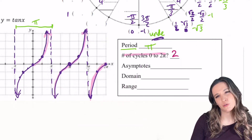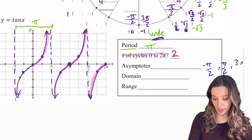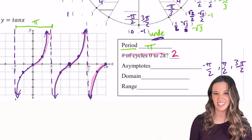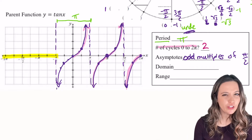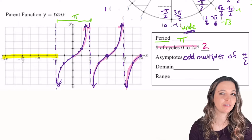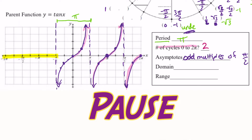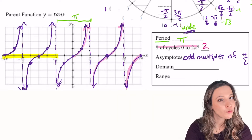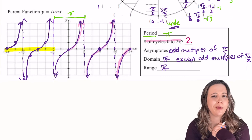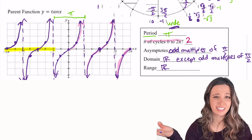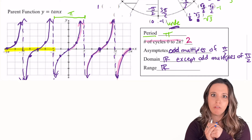Where are our asymptotes? I can see an asymptote at negative pi halves, another one at pi halves, another one at 3 pi halves. So is that just all my pi halves? It's not 2 pi halves or 4 pi halves — it's just the odd multiples of pi halves. Domain would be all values except for those odd multiples of pi halves where I have vertical asymptotes. And range — all the y values are represented, so all reals.